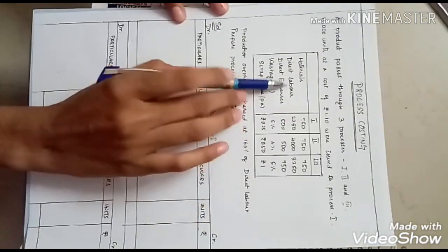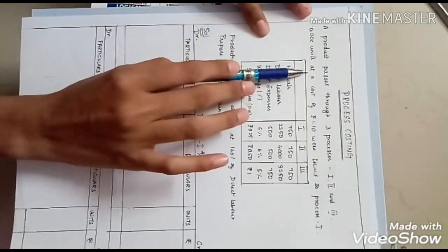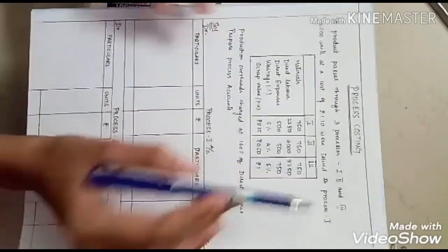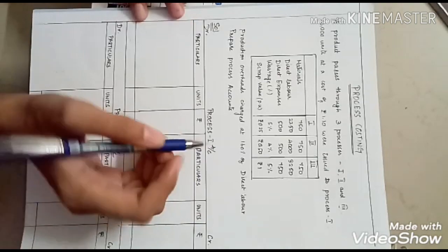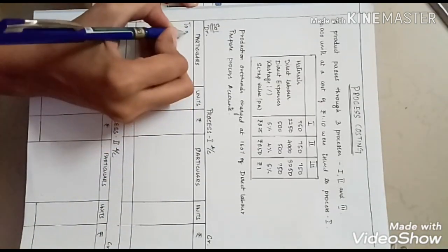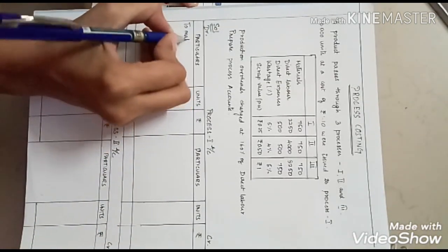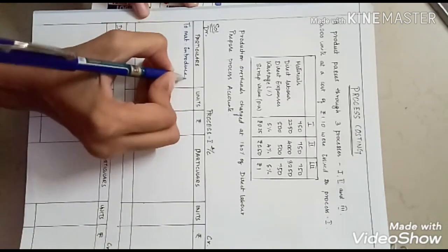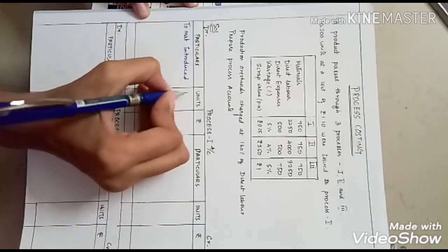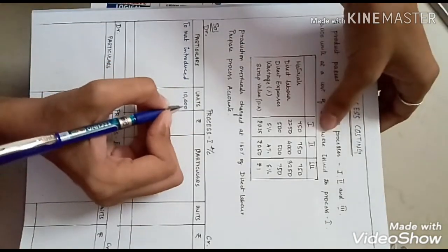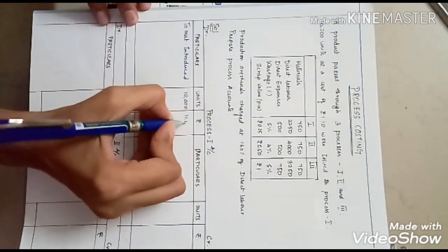Let's start with process one. They have given 10,000 units at a cost of rupees 1.10 were introduced. When materials are introduced, we are going to debit it — 10,000 units into 1.10 gives you 11,000.